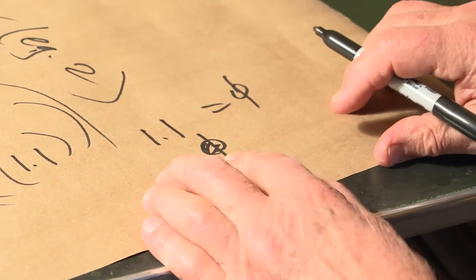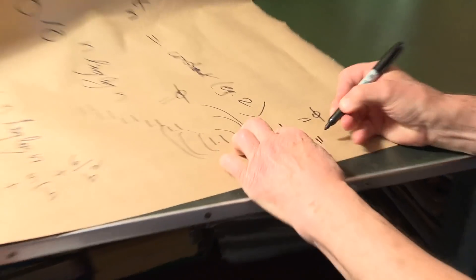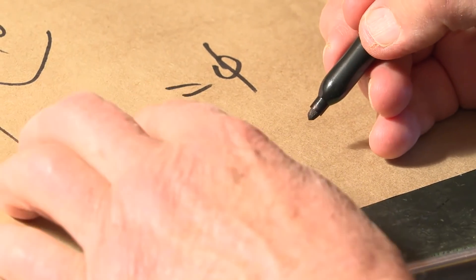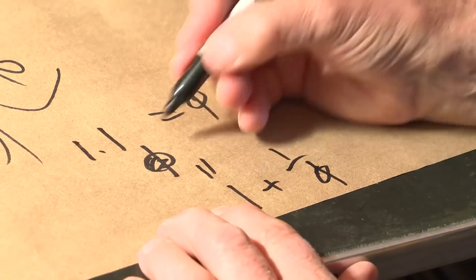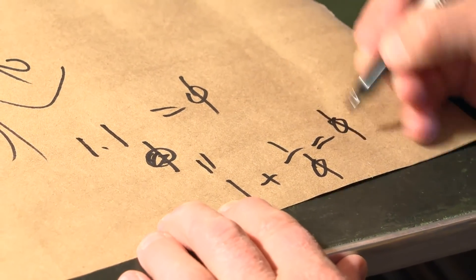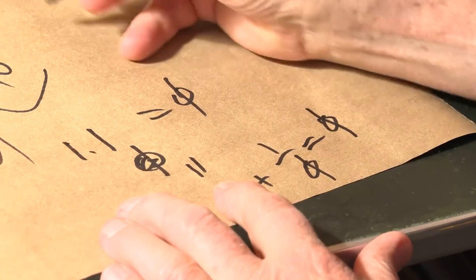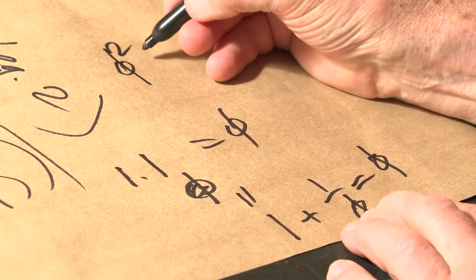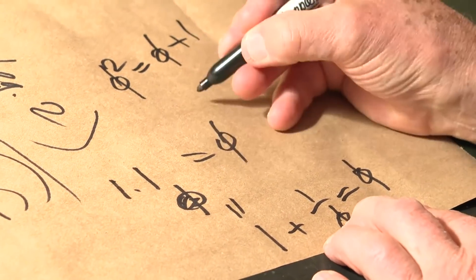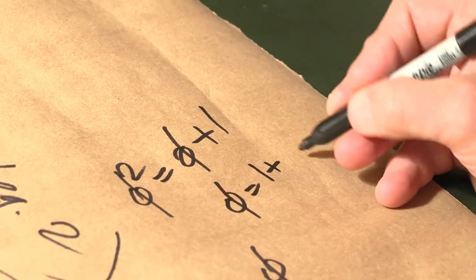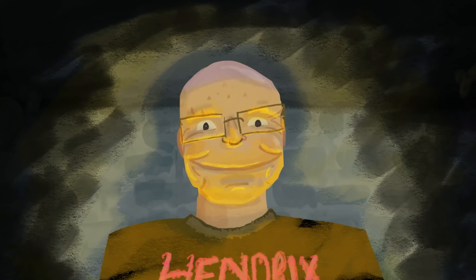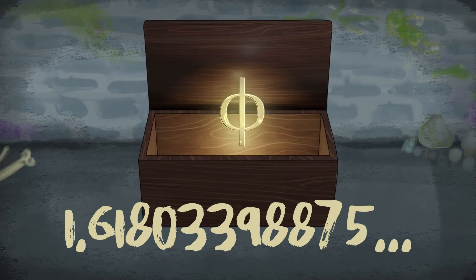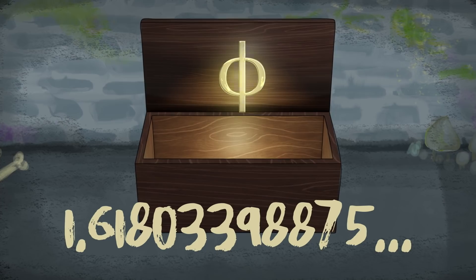Now, what does 1.1 sub phi mean? The 1 means 1 — that 1 is worth one dollar. That 0.1 means 1 over phi dollars. So phi is equal to 1 plus 1 over phi. Multiplying up by phi: phi squared equals phi plus 1. So phi is 1 plus the square root of 5, over 2 — it's the golden ratio! If we take 1.1 sub itself infinitely many times, it converges to the golden ratio.